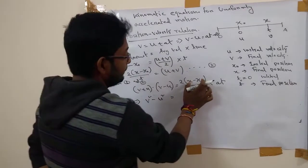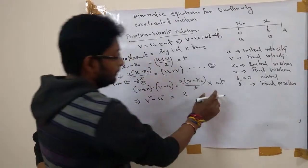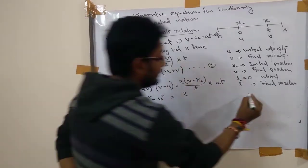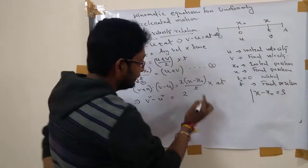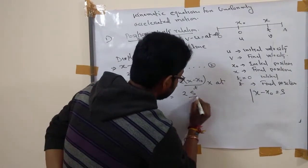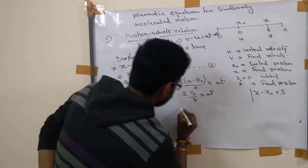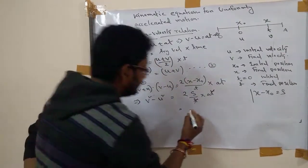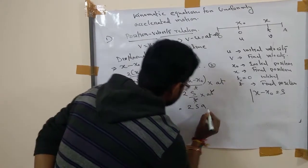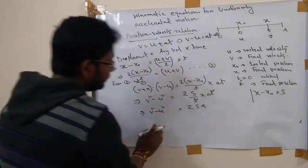We can write this as s because we already know the displacement x minus x naught equal to s. This is t into at. So at and at, what remains is 2 times a times s. This is v square minus u square equal to 2as.